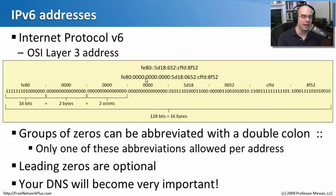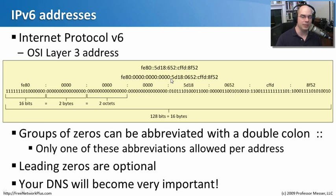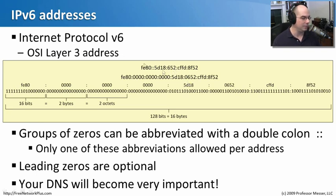Instead of something like 192.168.1.7, you now have this much longer address. IPv6 addresses can be simplified: if there's a large section of consecutive zeros, you can replace it with a double colon — but only once per address. Also, a leading zero at the start of a hexadecimal group can be dropped, so '0652' simply becomes '652.' These shortcuts help simplify writing out long IPv6 addresses.